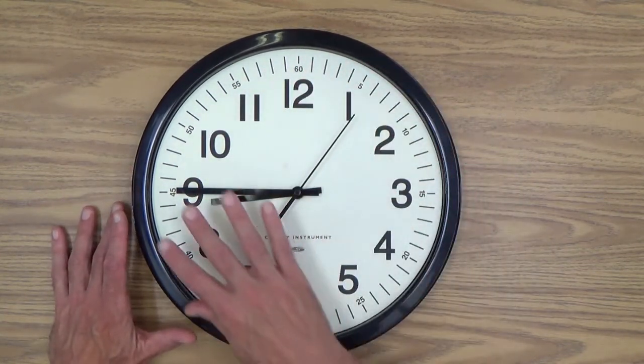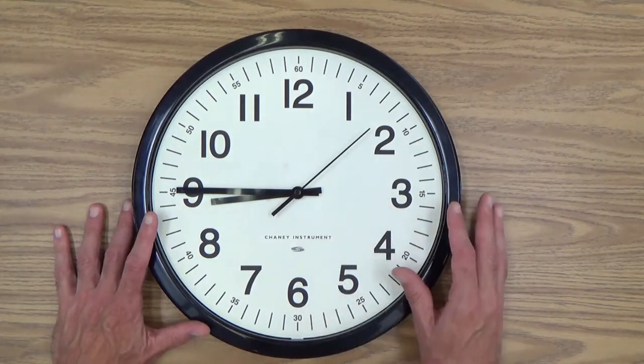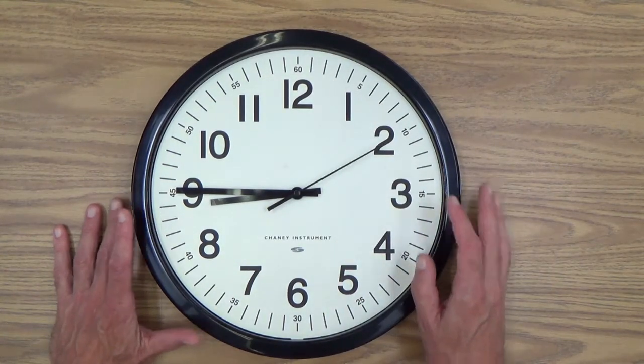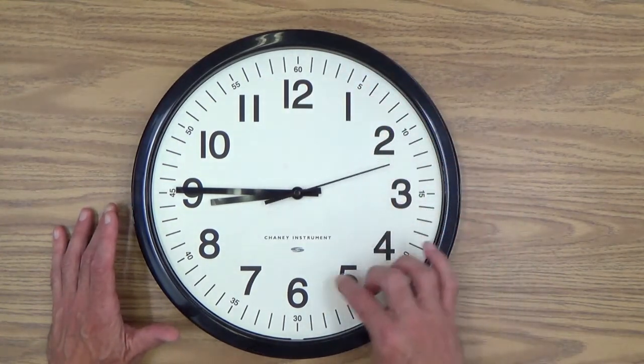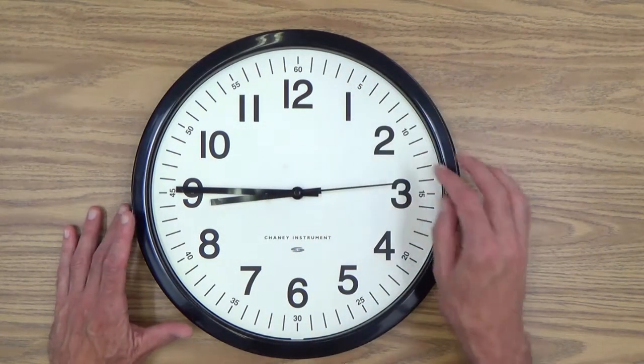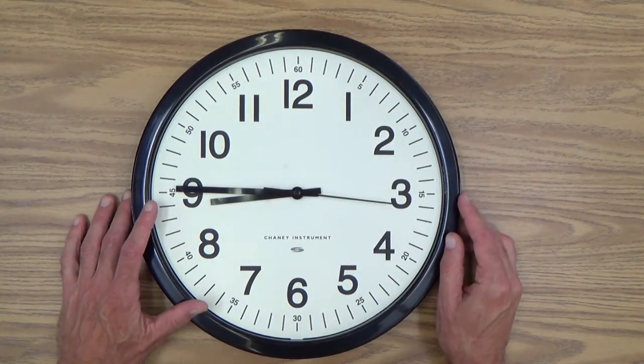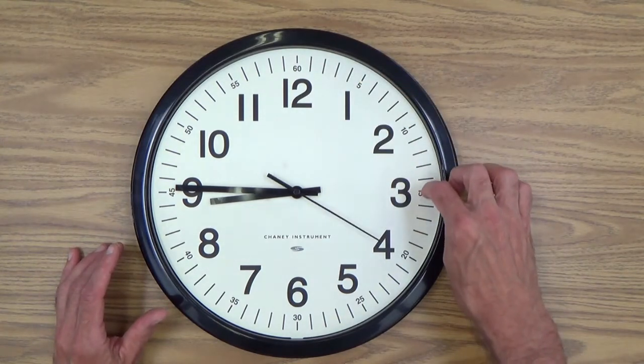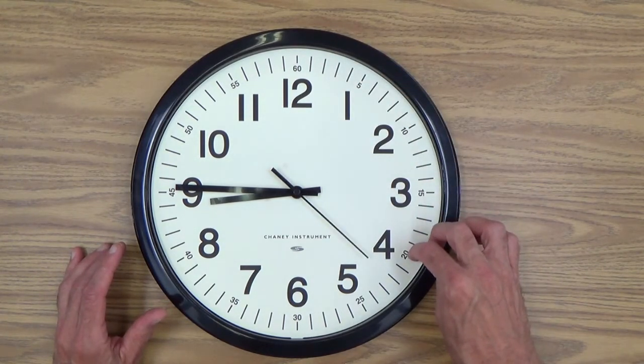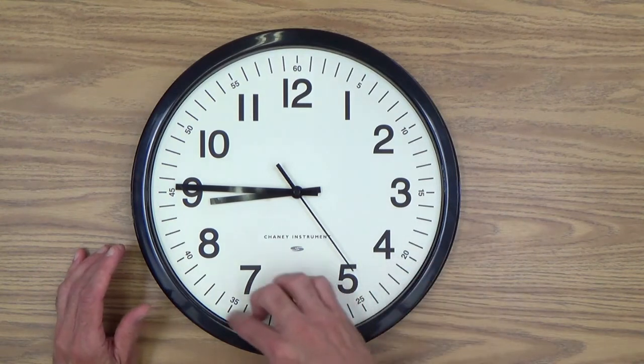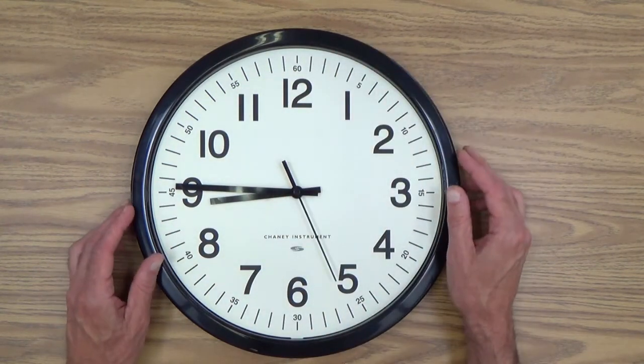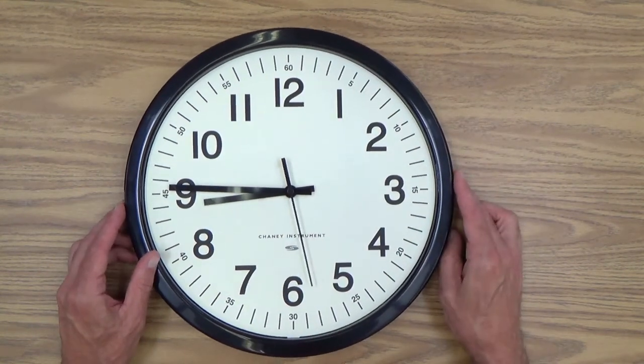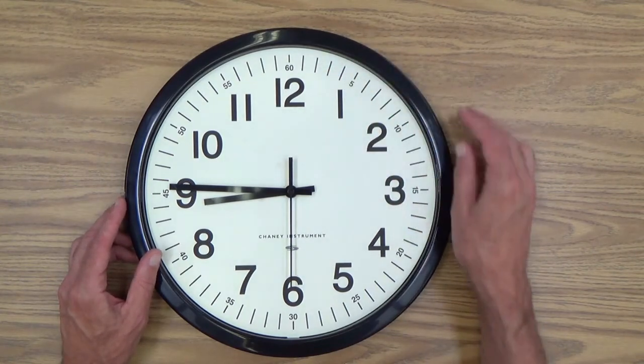This whole thing here, we call the face of the clock. And of course, these here are the numbers. They go from 1 to 12. These up here, these lines, and as you can see, there's some small numbers here. I'll talk about those in a while. I call these the ticks. I don't know if that's the proper terminology for these, but that's what I call them, the ticks.